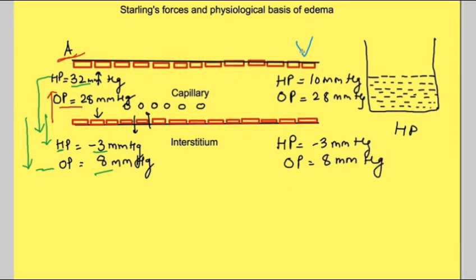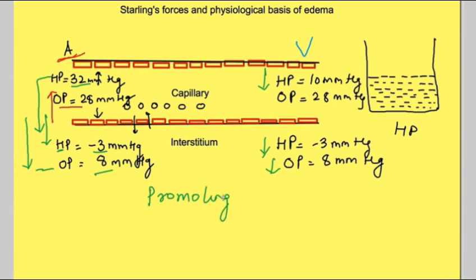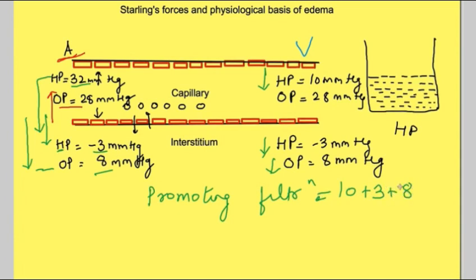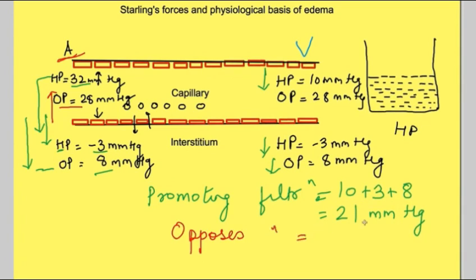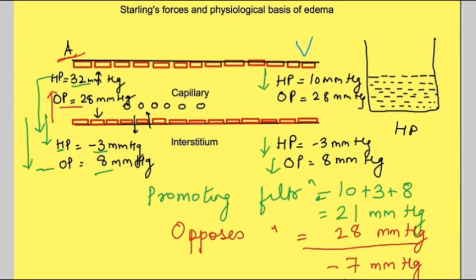At the venous end, forces causing outward movement of water are: capillary hydrostatic pressure (10 mmHg), interstitial hydrostatic pressure (3 mmHg), and interstitial osmotic pressure (8 mmHg), totaling 21 mmHg promoting filtration. The force opposing filtration is 28 mmHg. The net force is 21 minus 28 = minus 7 mmHg, meaning water is drawn into the capillary at the venous end.